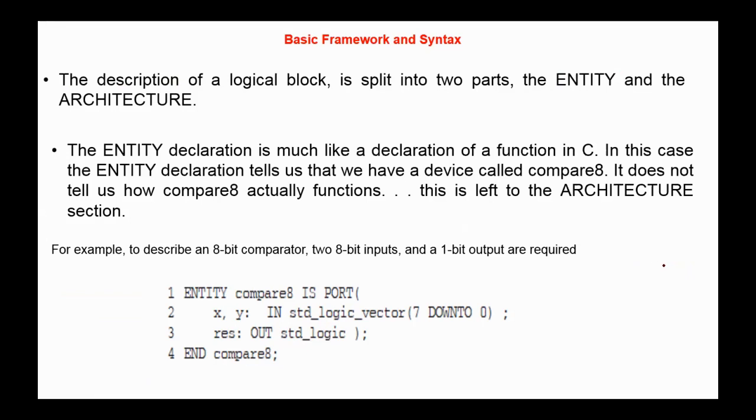Suppose for example that we have an 8-bit combinational compare circuit with 16 inputs and one output. Eight inputs for the first number A and eight bits for the second number B. The output produces one if they are equal and zero if they are not equal.